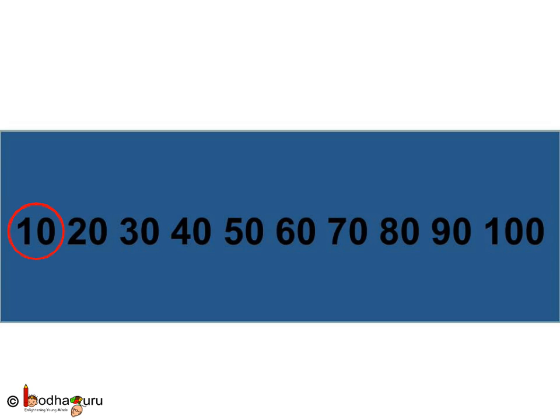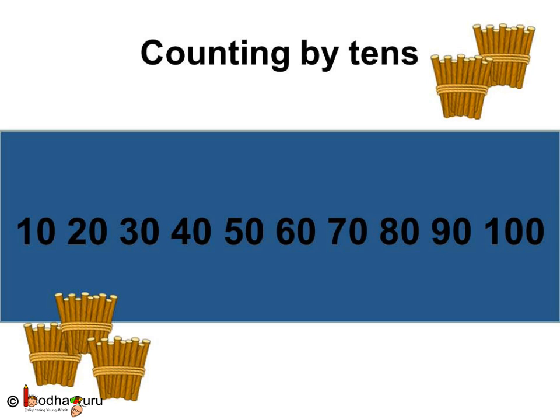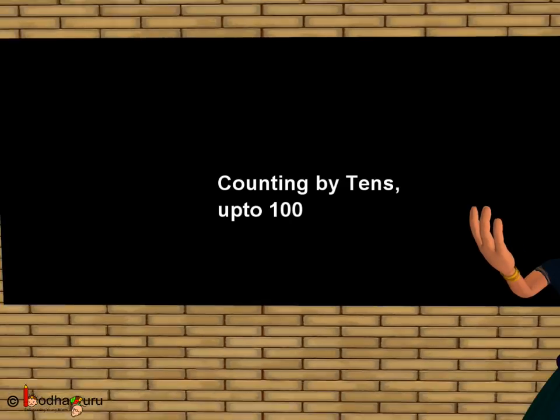Let us see how we counted: 10, 20, 30, 40, 50, 60, 70, 80, 90, and 100. We used bundles of 10 sticks for counting, and this is called counting by 10s.